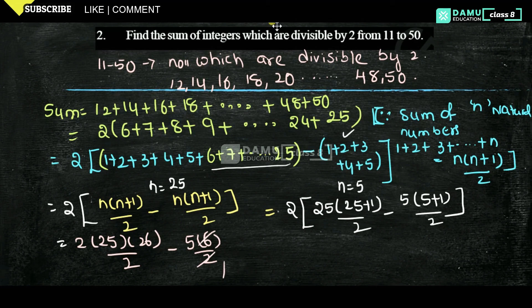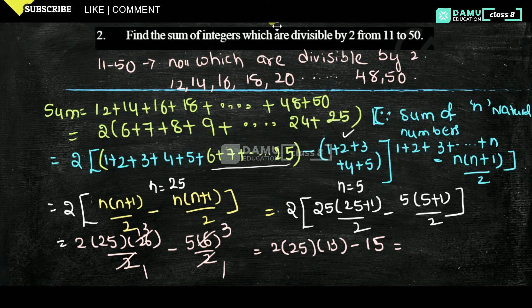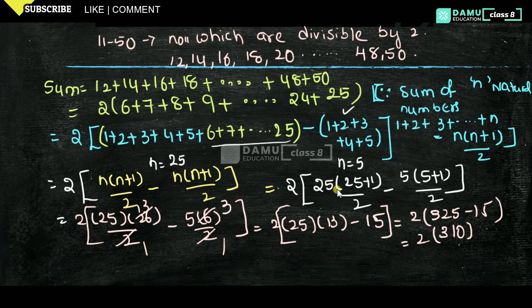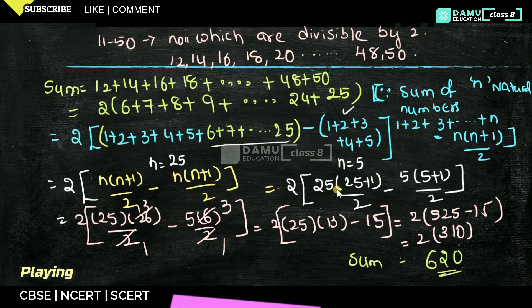So the sum is 2 into (325 minus 15), which equals 2 into 310. Therefore the final answer is 620.